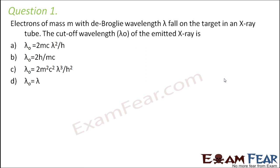Question number 1: Electrons of mass m with De Broglie wavelength lambda fall on the target in an X-ray tube. The cutoff wavelength lambda naught of the emitted X-ray is? The cutoff wavelength is just another term for threshold wavelength. First we need to find out the kinetic energy of these electrons.